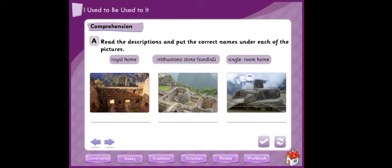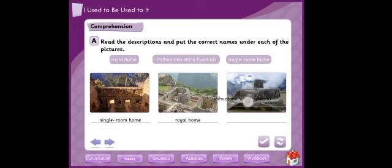Let's begin with the one on the right. It is single room home. There will be a slight difference between your book and mine, so I'll send you a picture showing the difference so you can solve according to your book. Picture two is royal home, and picture three is the sundial or Inti Watana stone. Good, this is exercise A.